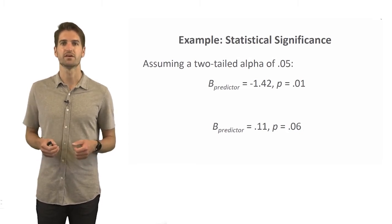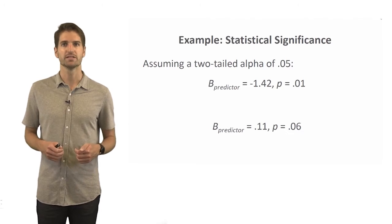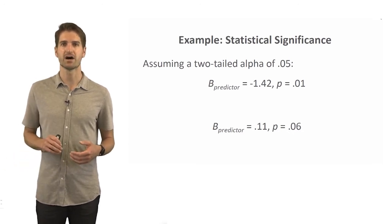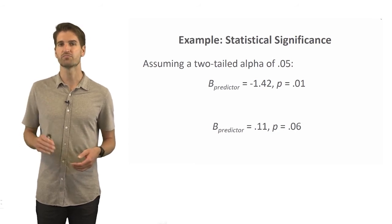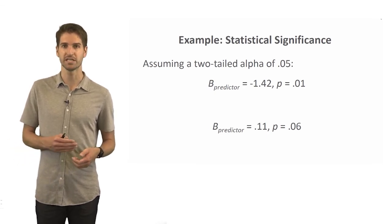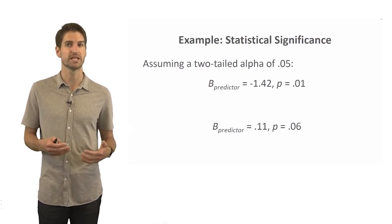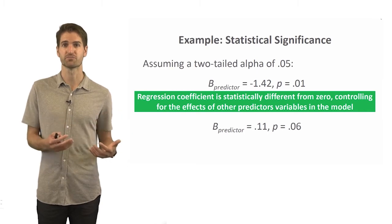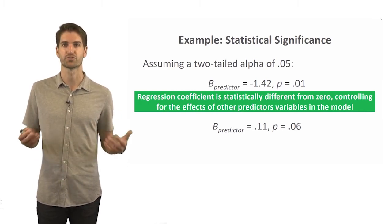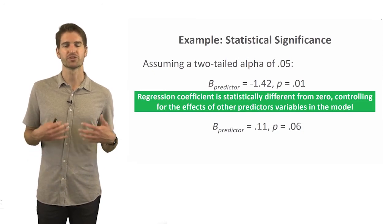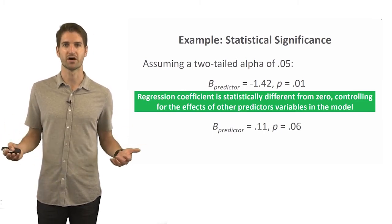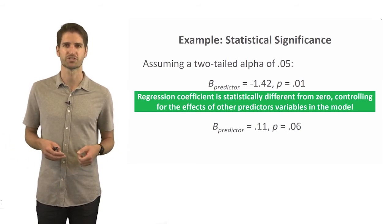In the first example, assume a regression coefficient B is equal to negative 1.42 with an associated p-value of .01. With alpha set at .05 two-tailed, that p-value of .01 is less than .05, so we reject the null hypothesis that the regression coefficient equals zero — we conclude it is statistically significant. When a coefficient is statistically significant, we note that we're controlling for the effects of other predictor variables, using language such as 'incrementally above,' 'holding the other predictors constant,' or 'above and beyond the other predictors in the model.'